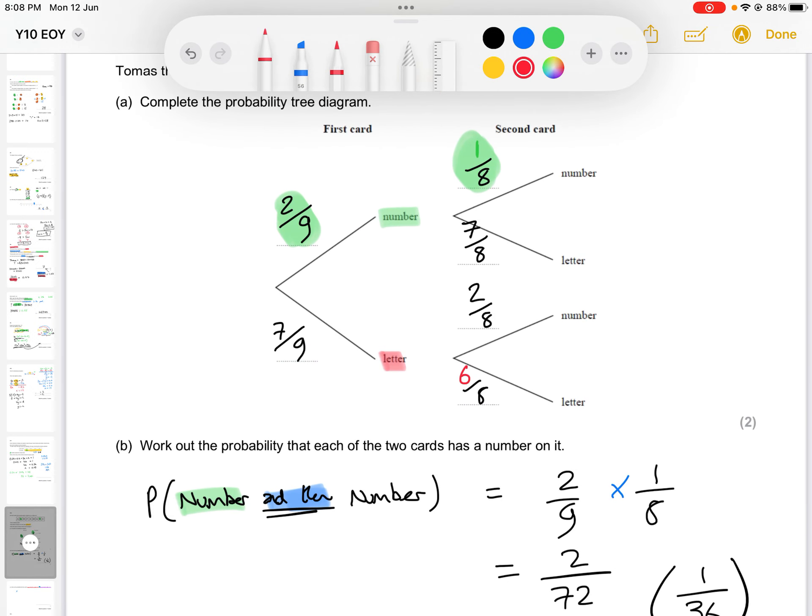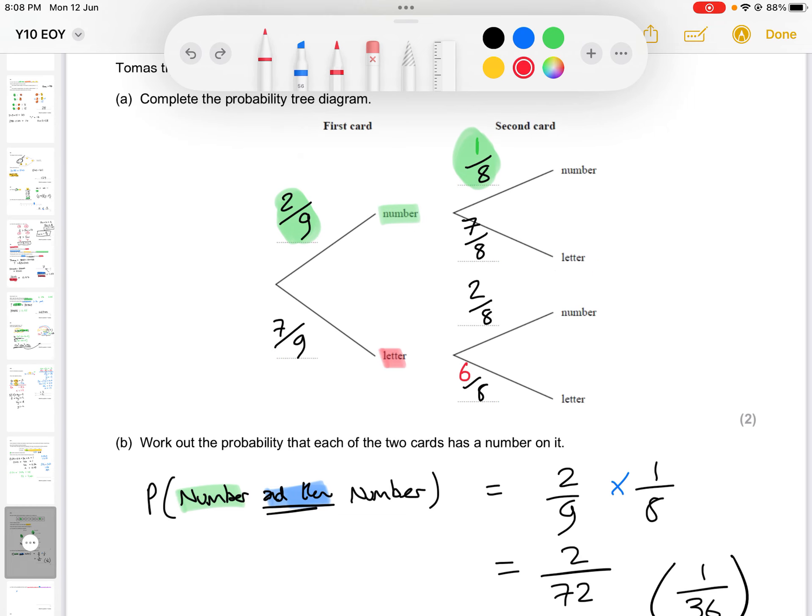You can calculate both of these separately. So for example, you could get a number and a letter. So number letter or number and letter. So we want to go down this route for starters. We also have the opportunity of getting a letter first and then a number going down this route, giving us L and N.